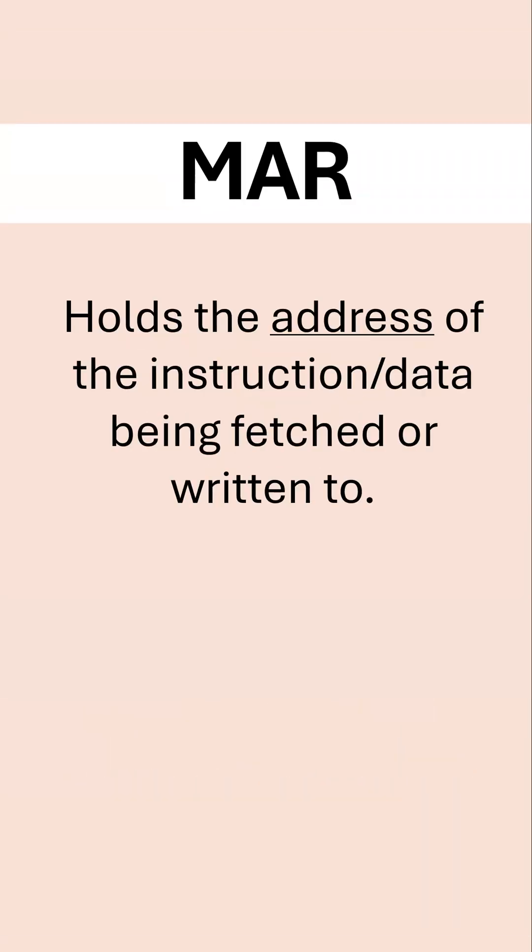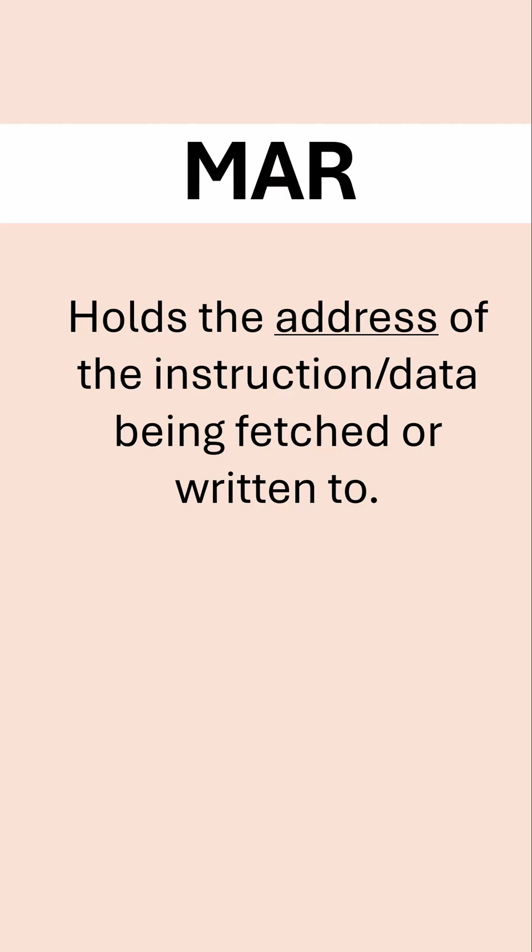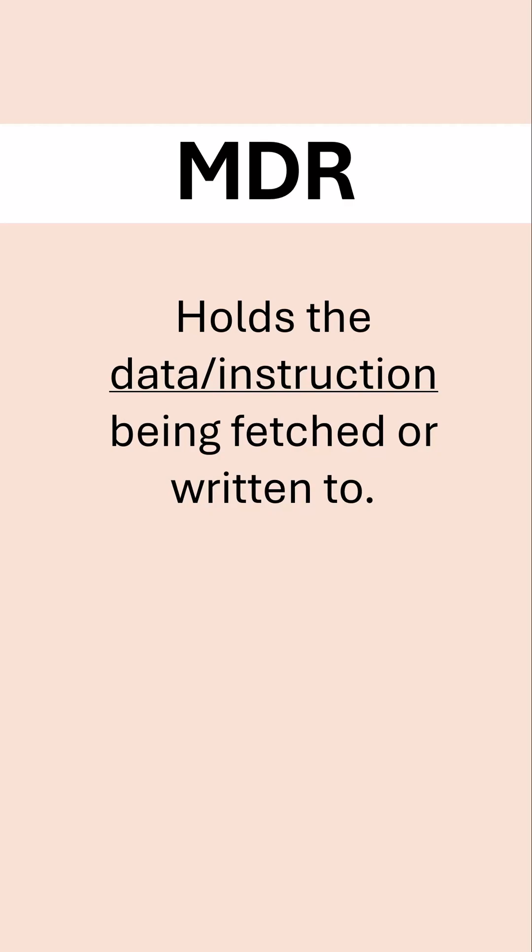The MAR stands for the memory address register. It holds the address of either the instruction or the data being fetched or written to. The MDR is like its non-identical twin — it stands for memory data register, and it holds the actual data or instruction the MAR is referring to.